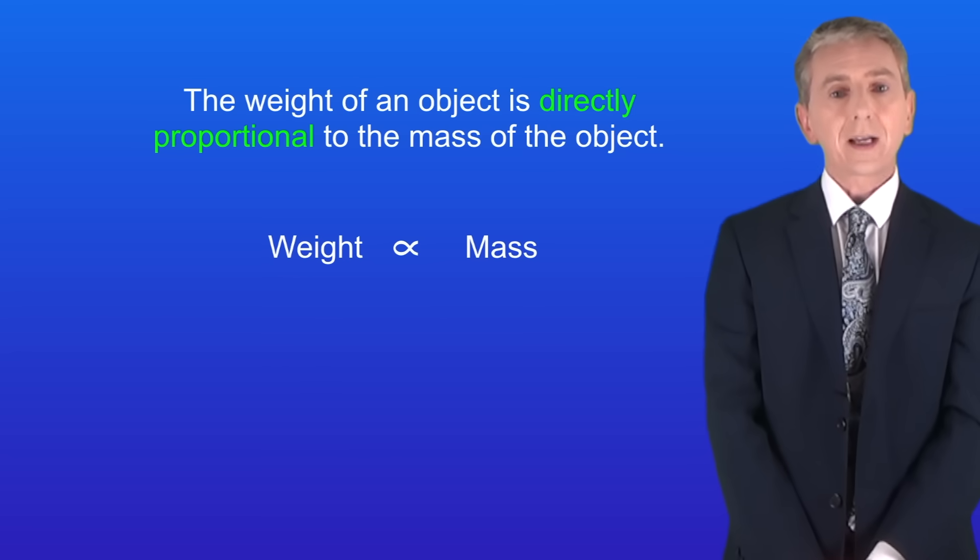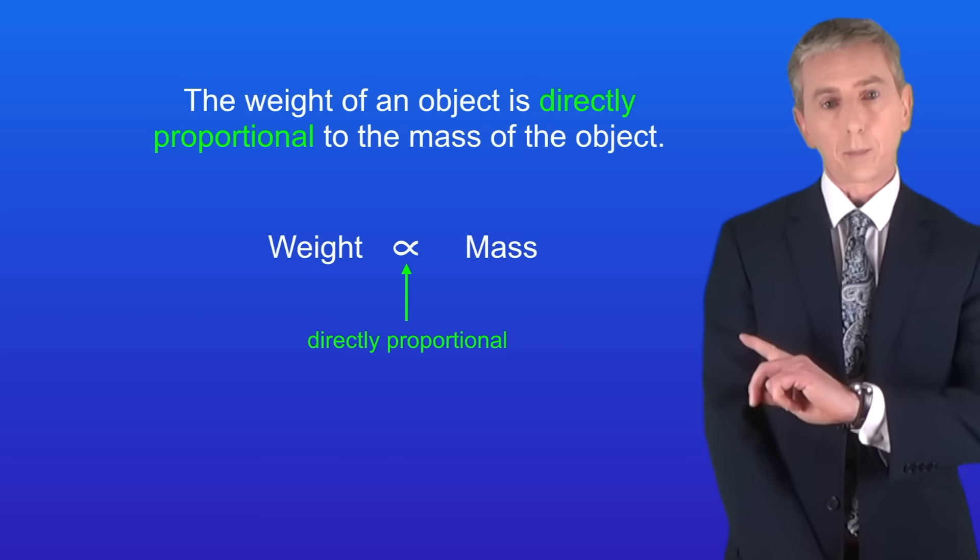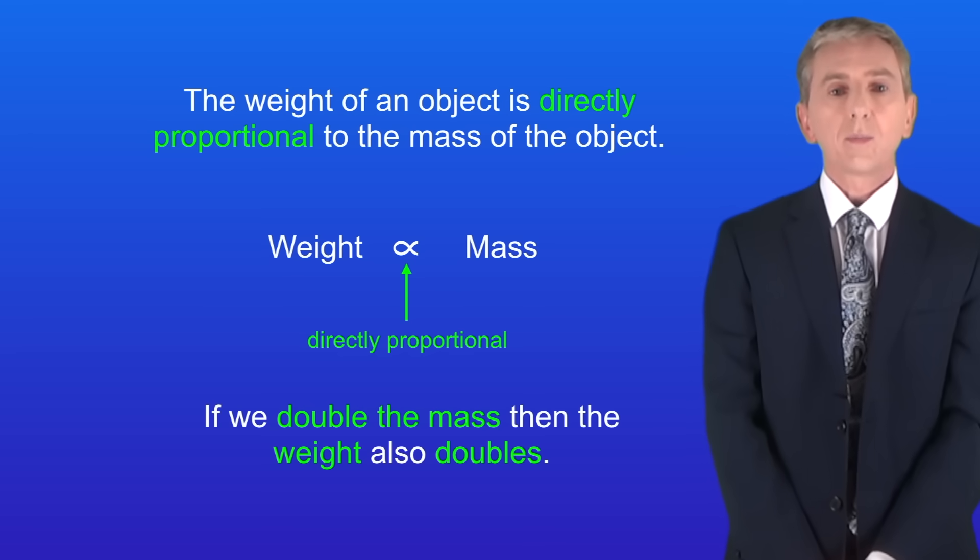Now the weight of an object is directly proportional to the mass of the object and we can show that using this symbol. What this means is that if we double the mass then the weight also doubles.